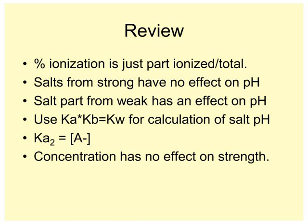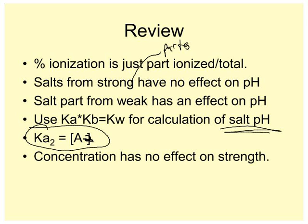Review. Percent ionization is just part ionized over total, which I dropped that part to do it before. Salts from strong parts have no effect on pH. Salt part from weak has an effect on pH. Use Ka times Kb equals Kw for calculations of salt pH. And then just to remind you, that Ka2 thing is the concentration of A2-, which is a nice little guy to remember A2-. And we did that earlier, but that's a quick one to go in there. And concentration has no effect on strength, much like songs about ants have no effect on your ability to remember that formic acid comes from ants. But I wish you an ant-free weekend, although it would be nice to be warm enough that those little red ants all over North Campus come back. So see you in class tomorrow.